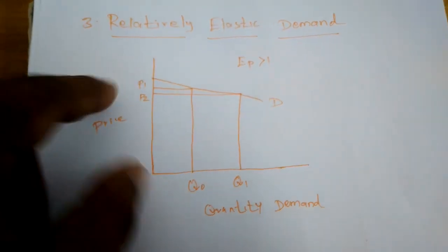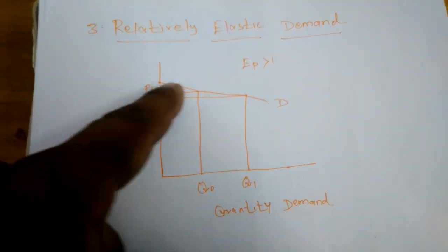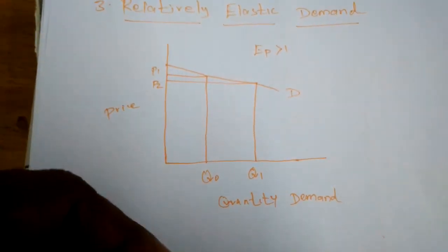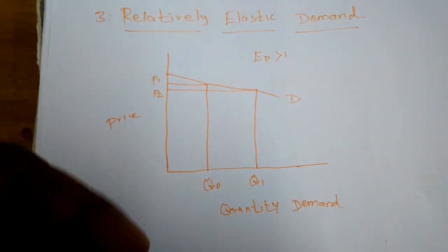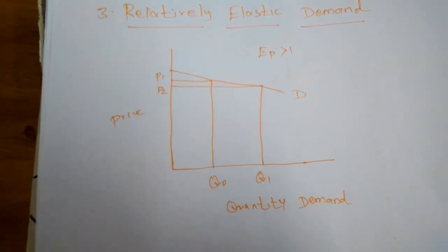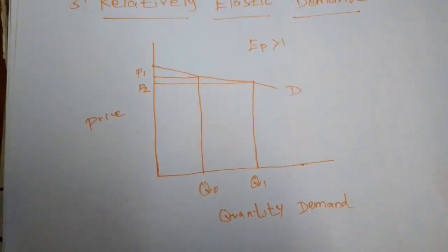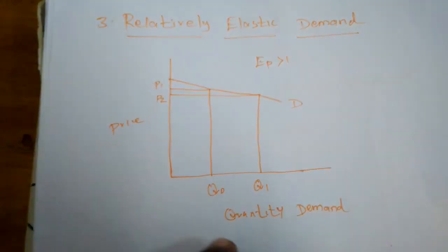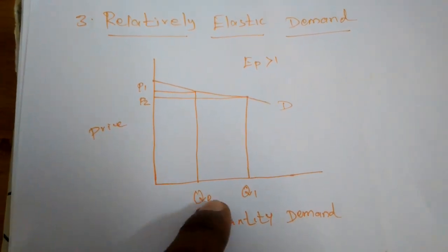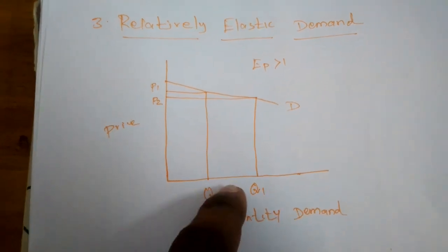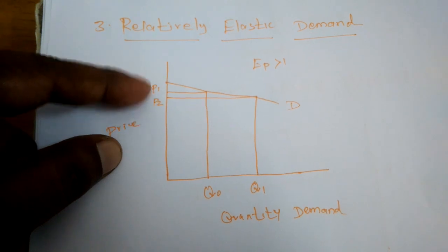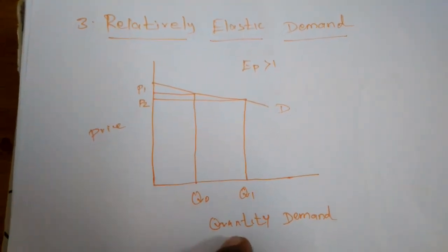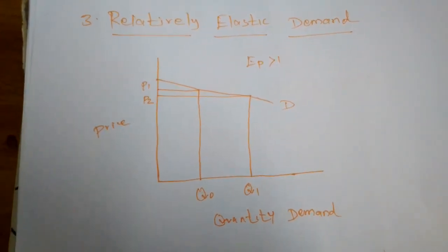In relatively elastic demand, the demand curve is gradually sloping, meaning that when the price level change is small, the quantity demanded is very high. For example, if the gap between P1 and P2 is 5 units, the gap between Q1 and Q2 is 10 units. When the price changes by 5 units, the quantity demanded changes by 10 units — the quantity change is greater than the price change. This is called relatively elastic demand.